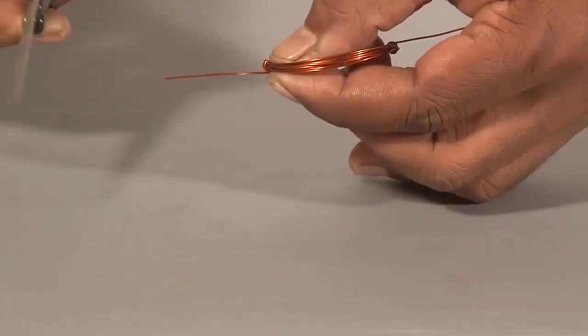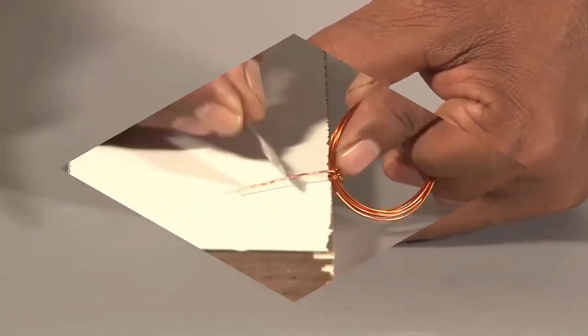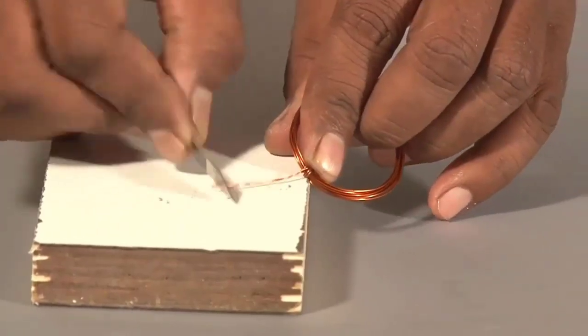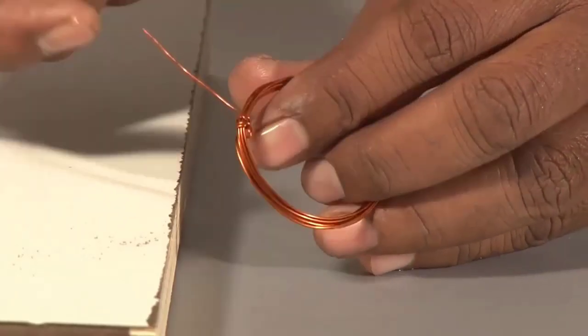With the scissors, trim both these ends so that they are just 3 cm long. Now take a knife and scrape off the insulation on 3 sides from one end such that one side is still insulated.